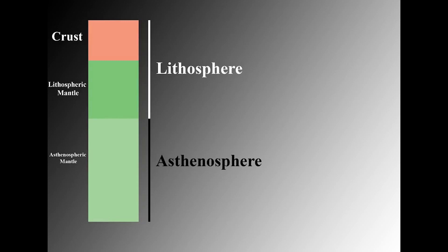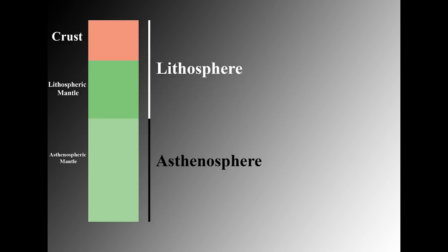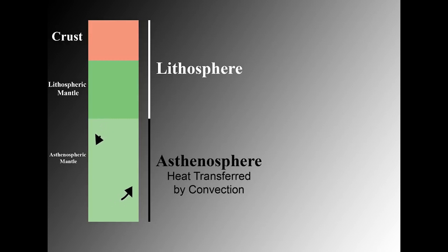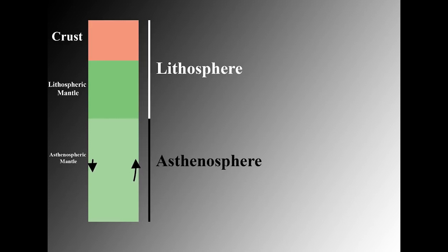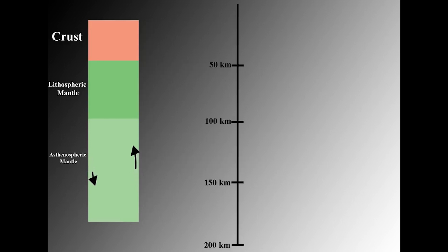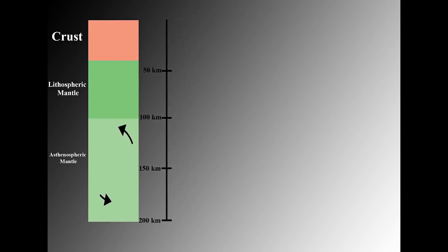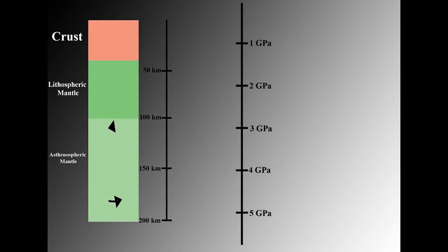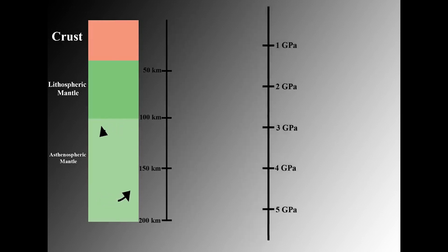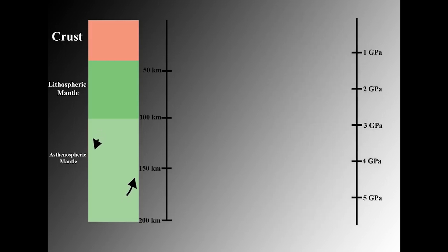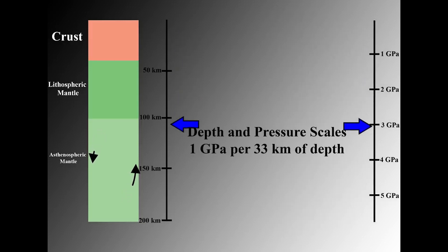The lithosphere is rigid and thus can only cool by conduction. This cooling style differs from the asthenosphere, which is able to convect due to being hotter and weaker. Asthenospheric convection brings the great heat of earth's interior to the base of the lithosphere. With a depth scale in place, note that the lithosphere generally extends to 100 kilometers deep. A pressure scale can also be added, as pressure varies with depth in earth's interior.